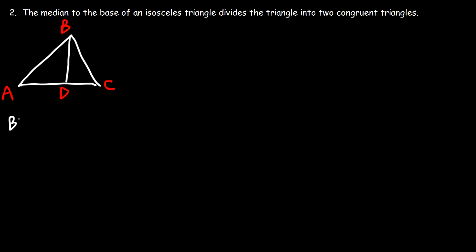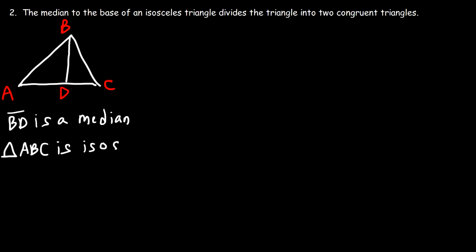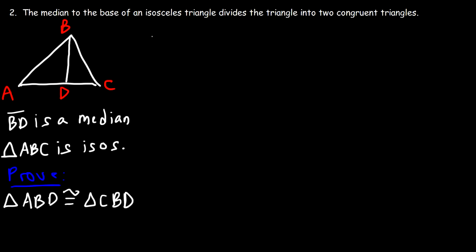Let's write the facts we know: BD is a median, and triangle ABC is isosceles. Our task is to prove that the two triangles are congruent — that triangle ABD is congruent to triangle CBD. Let's write our two-column proof with statements and reasons.